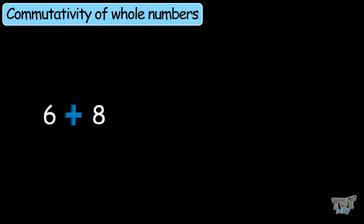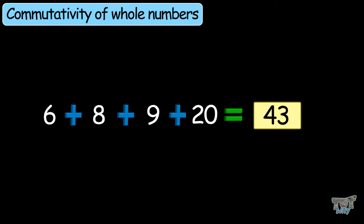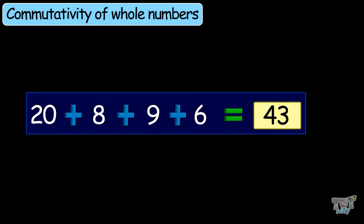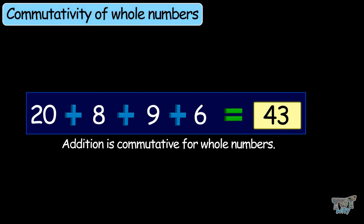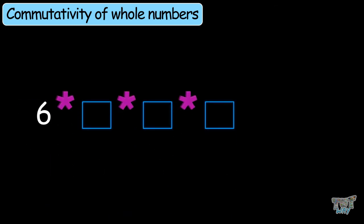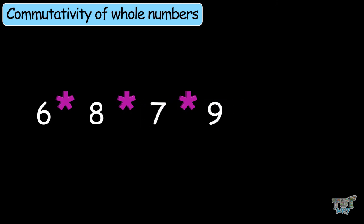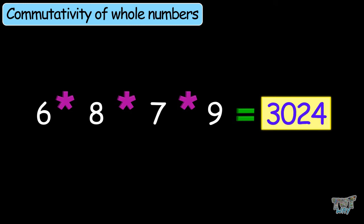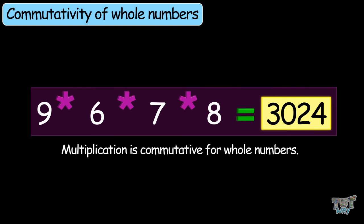Here we have another example: 6 plus 8 plus 9 plus 20 — the answer is 43. Let's change the order: 20 plus 8 plus 9 plus 6. Calculate this — the answer will still be 43. This example depicts that addition is commutative. Here we have another example where we multiply four numbers: 6 times 8 times 7 times 9 — the answer is 3,024. Now change the positions and multiply 9 with 6, 6 with 7, and 7 with 8 — your answer will again be 3,024. This example depicts that multiplication is also commutative.